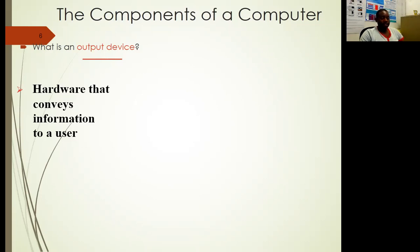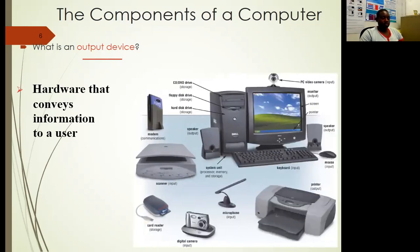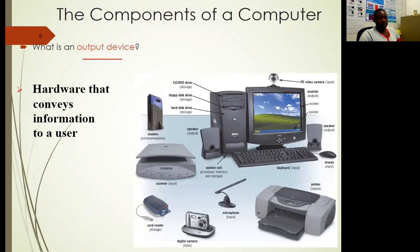The hardware used to produce that output includes speakers — because the human being understands speech — printers, so you can print and read from paper, and the monitor, so you can see what is happening. Like when you watch this lecture, if you look at your monitor, that's also an output device. Speakers, printers, and so on come as output devices — an output device conveys information to a user.